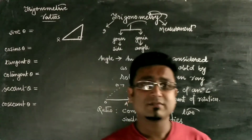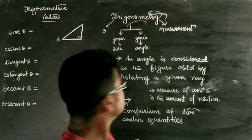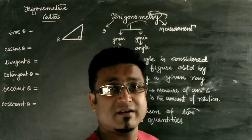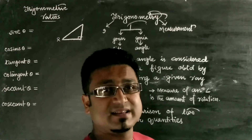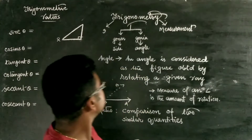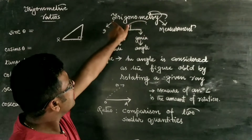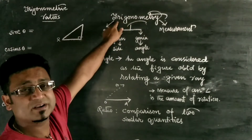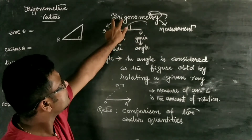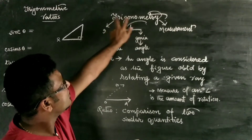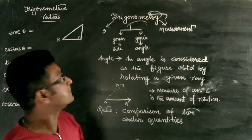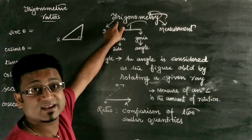Let's start our journey. First of all, let me give you the idea of what is trigonometry. Until unless you know the basics, you will find the subject very difficult. So let me start. As you can see, I've written the word 'trigonometry' here. Let's break this word into three parts: 'tri', 'gono', and the last part 'metric'.